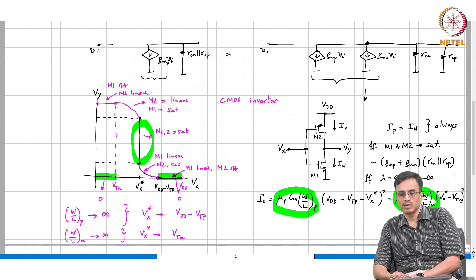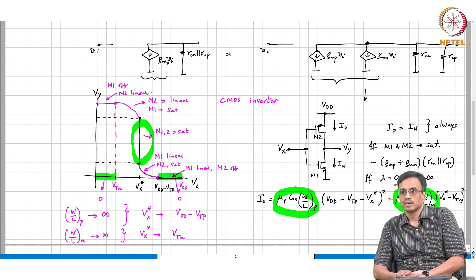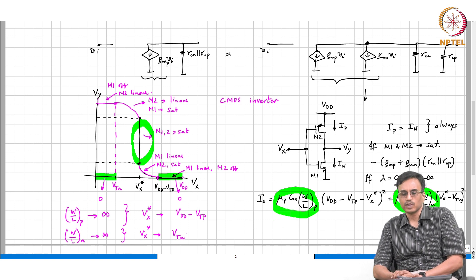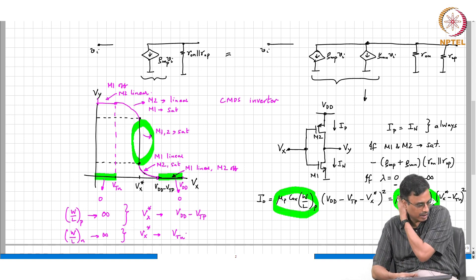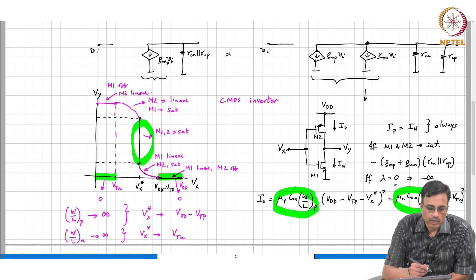What is the minimum supply voltage needed for operation? If the supply voltage is less than VTN plus VTP, then the middle high-gain region cannot exist at all. So the minimum VDD required — if you want transistors to turn on and work quickly — is VTN plus VTP. Of course, transistors can operate in sub-threshold below that, but for normal operation this is the minimum.